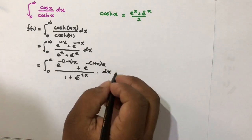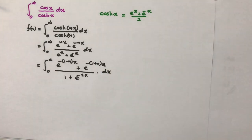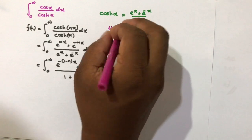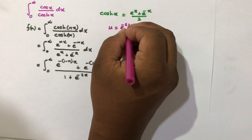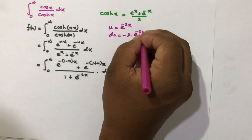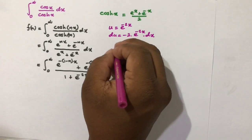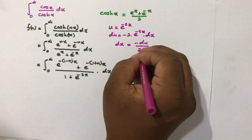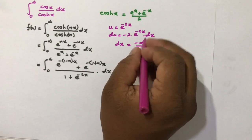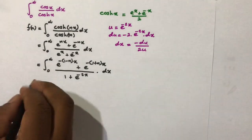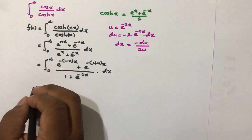Now I take the substitution u = e^{-2x}. Differentiating, du = -2e^{-2x} dx. We can isolate dx: dx = -du / (2u), since e^{-2x} = u.